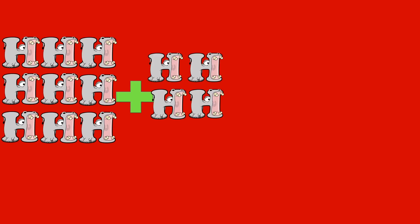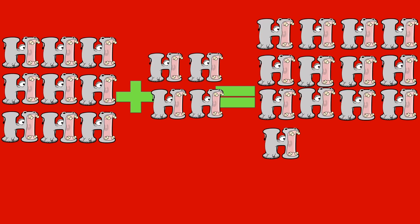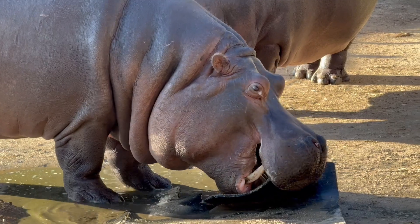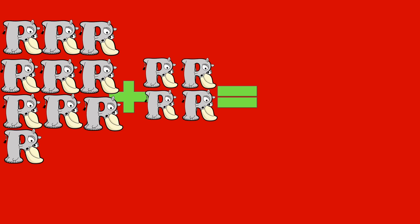Nine hippos plus four hippos equals thirteen hippos. Nine plus four equals thirteen. Hippo.